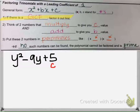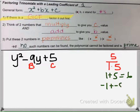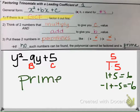For this example there is no GCF. The only factors of 5 are 1 and 5, but there is no way to add 1 and 5 to get the B value of negative 9. Therefore, this polynomial cannot be factored — we call it prime.